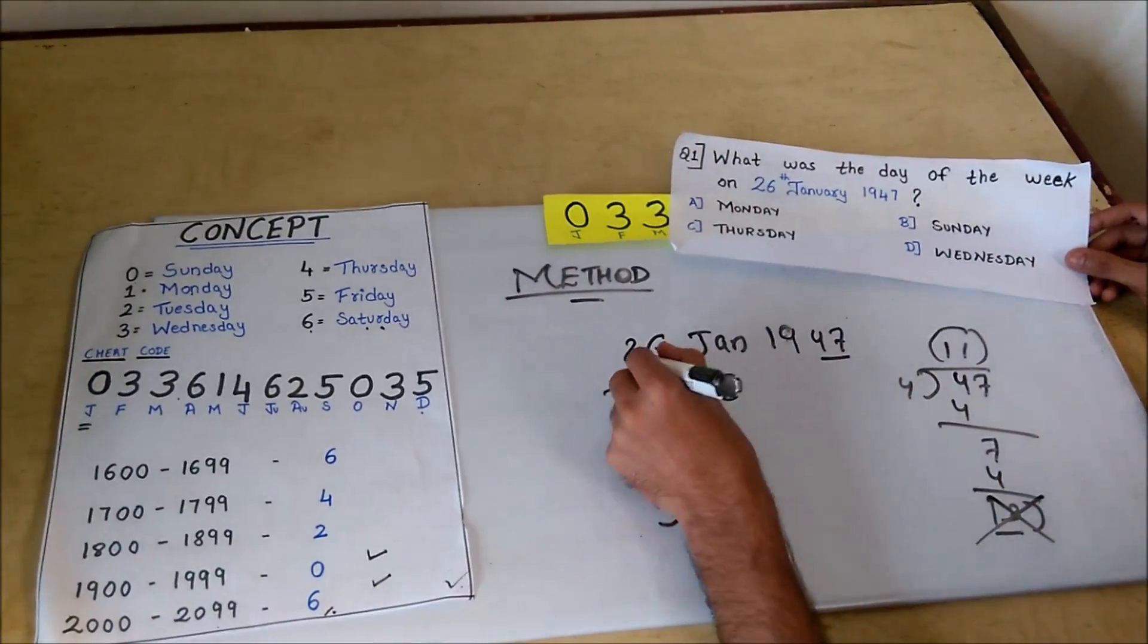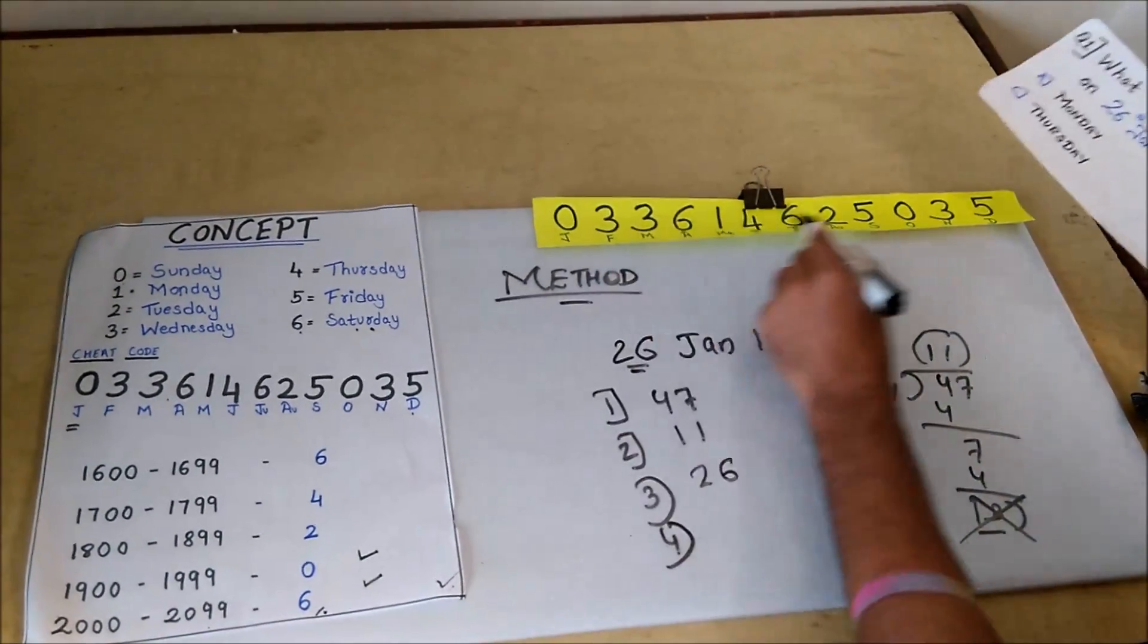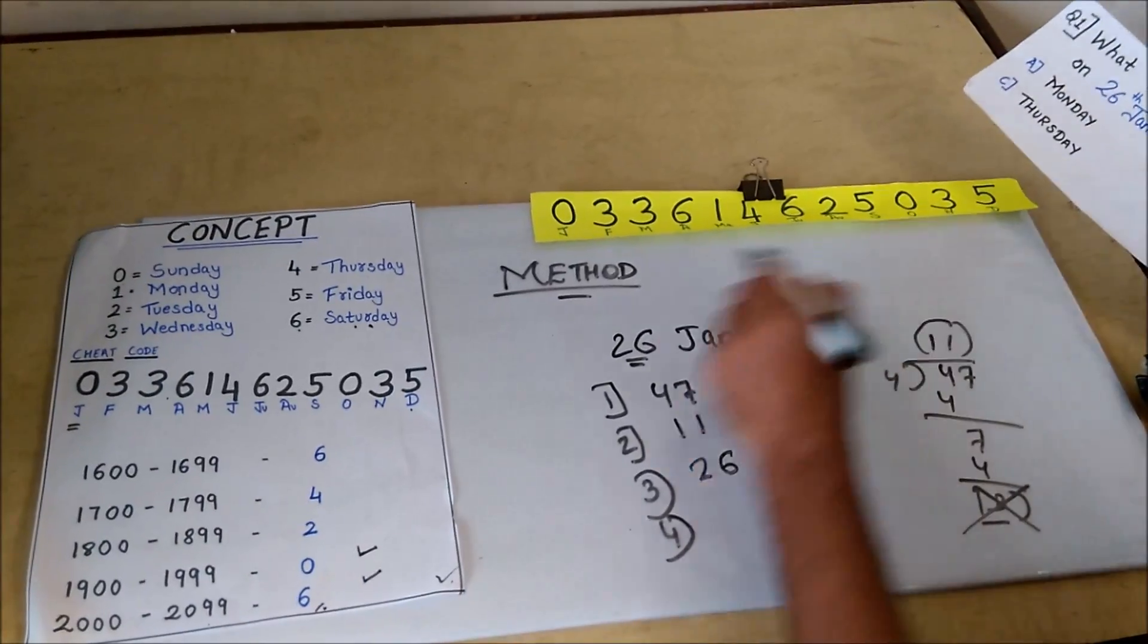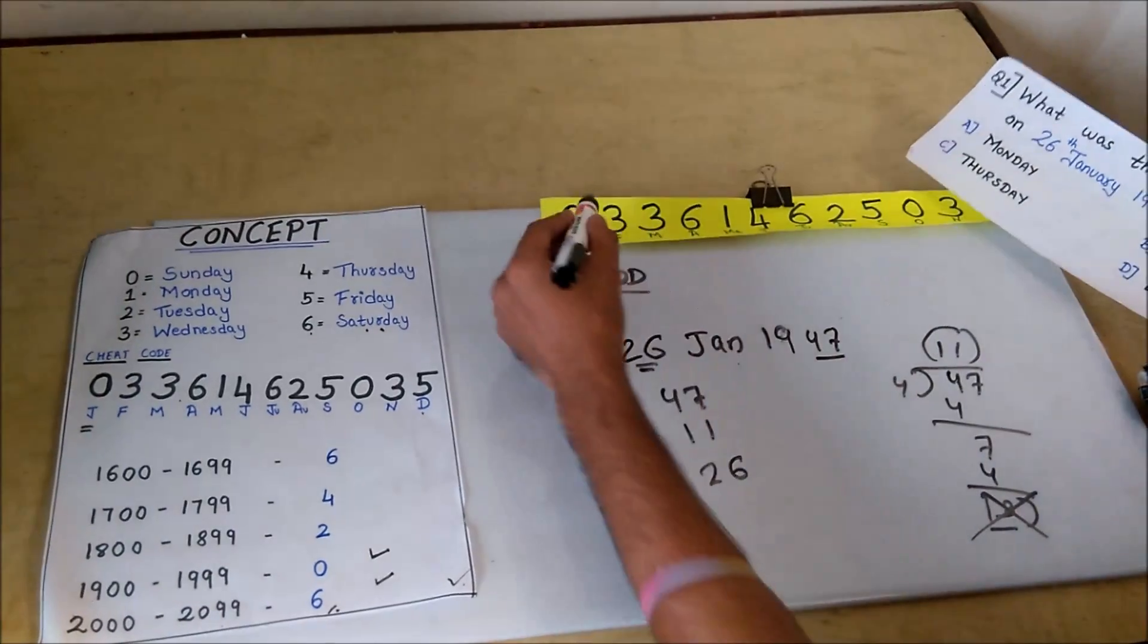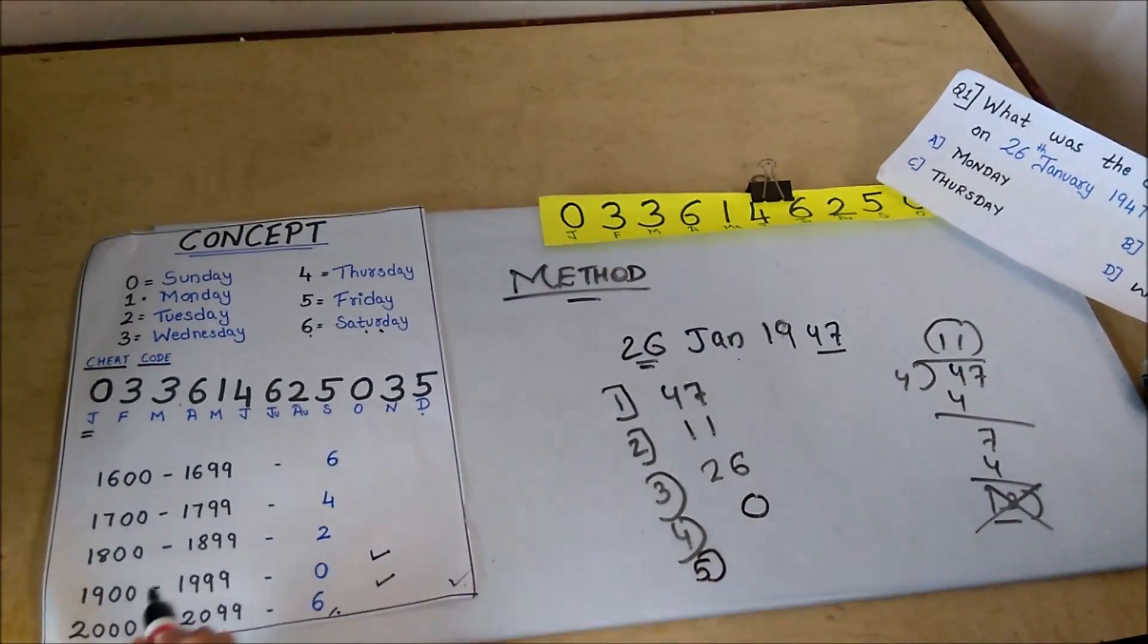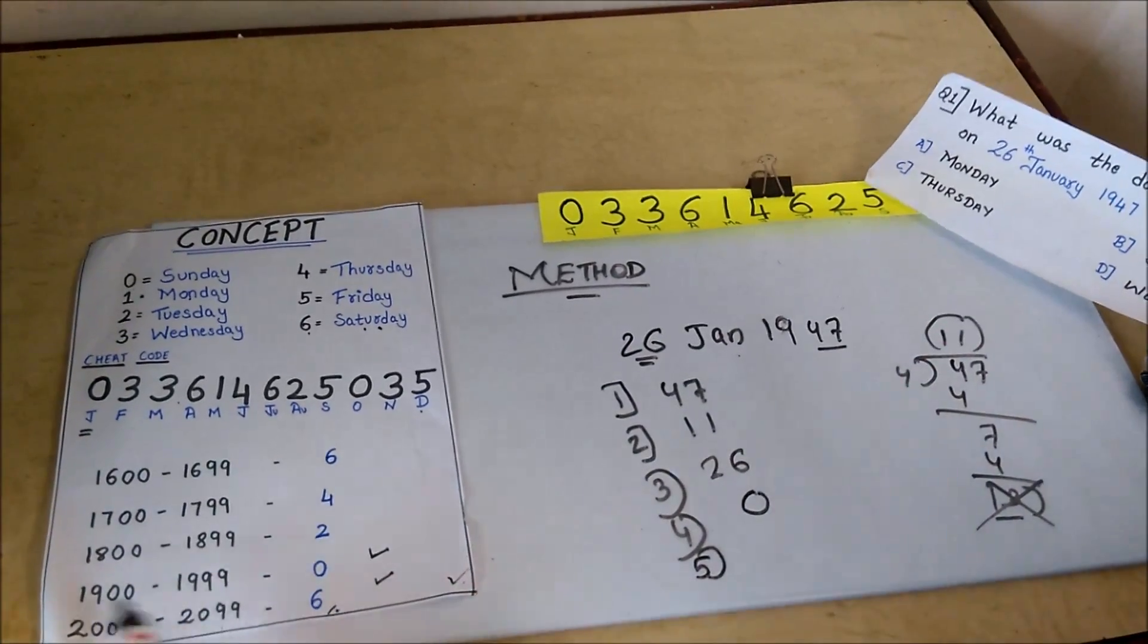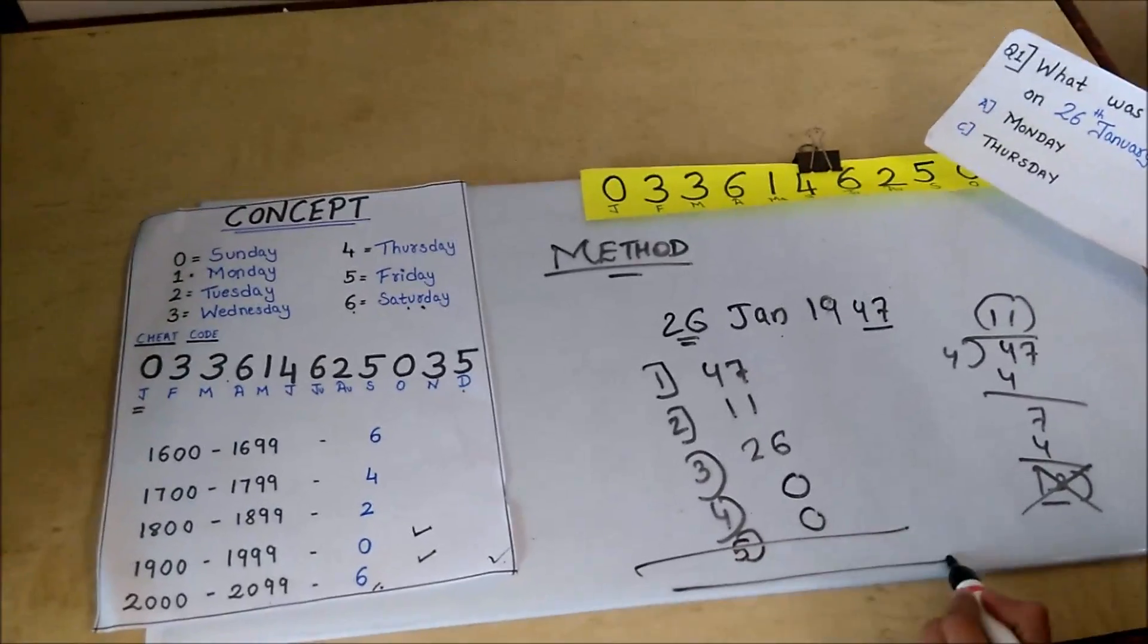Now third thing, take the date. Date is 26. As I told you, these numbers are very important for the month, so I did it in front of you only. Take for January the cheat code is 0. Take it. And for the year, the year is 1947, so in the 1900 series, we have to add 0. Now add everything.